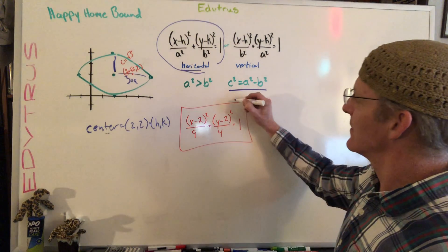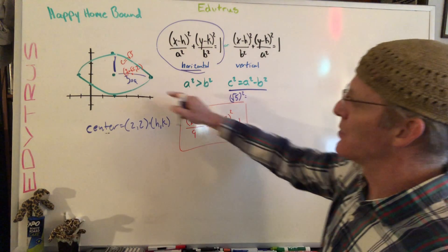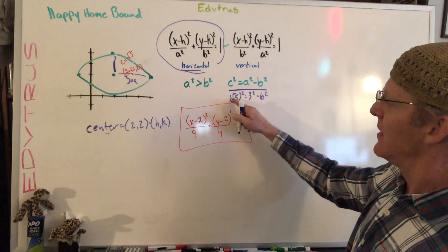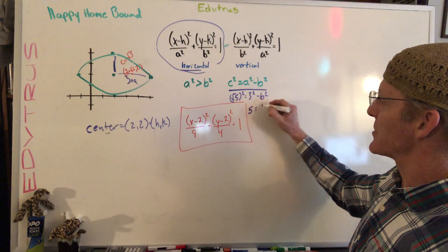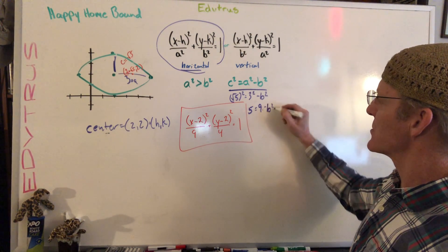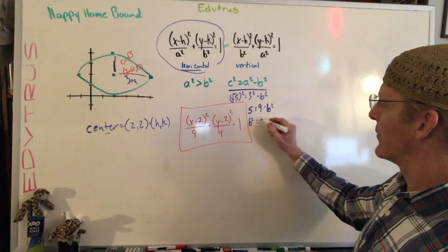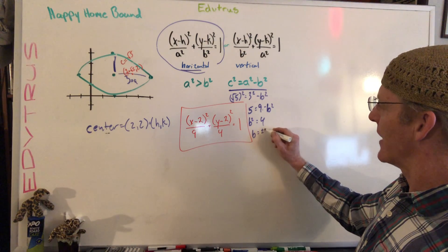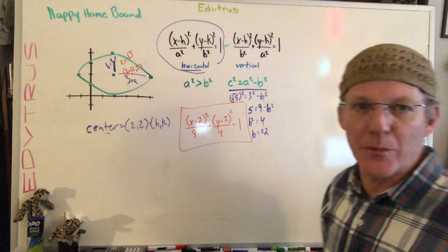We could go ahead and plug that in here. Square root of 5 squared equals - we know a is 3 squared minus b squared. Square root of 5 squared would just be 5, 3 squared is 9 minus b squared. Move the b squared over here to make it positive, move the 5 over there to get rid of it, and we find that b equals plus or minus 2, which is exactly what we had said up here before - that b was a 2.